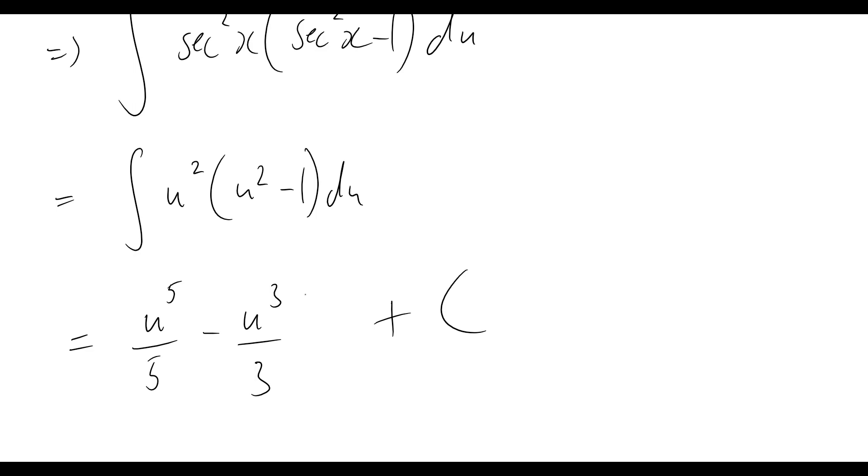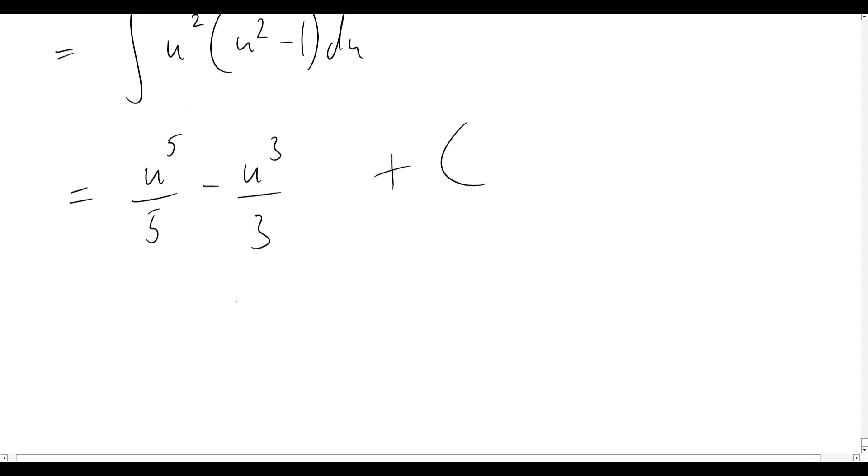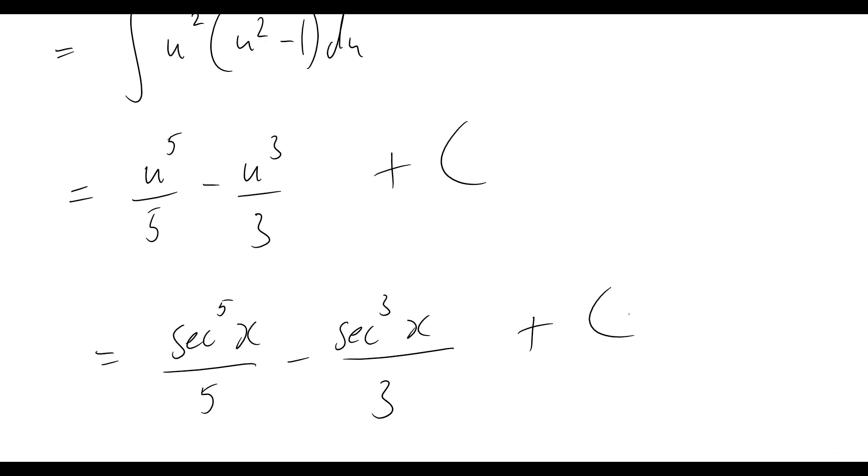Now, at our last step here, all we need to do is remember that u is equal to sec x. And now we'll just write that in instead. So, our answer now becomes sec to the power of 5 x on 5 minus sec to the power of 3 x on 3. And then plus c, some constant term there. And that is our final answer.